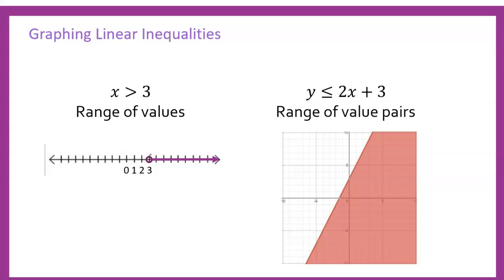For one-variable inequalities, we use a number line to represent the range of values that satisfy the inequality. Values like 4, 5, 6, and everything above — including decimals like 3.5, 4.7, or 10.3 — all satisfy the inequality. But when we have an x value and a y value, a number line won't work because we need values for both. So we use a coordinate plane with an x-axis and a y-axis, where any coordinate pair in the shaded region is a solution.